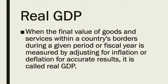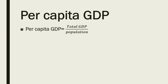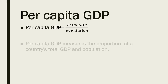Real GDP — when the final value of goods and services within a country's border during a given period or fiscal year is measured by adjusting for inflation or deflation for an accurate result, it is called real GDP. Per capita GDP formula: Per Capita GDP = Total GDP divided by Total Population.